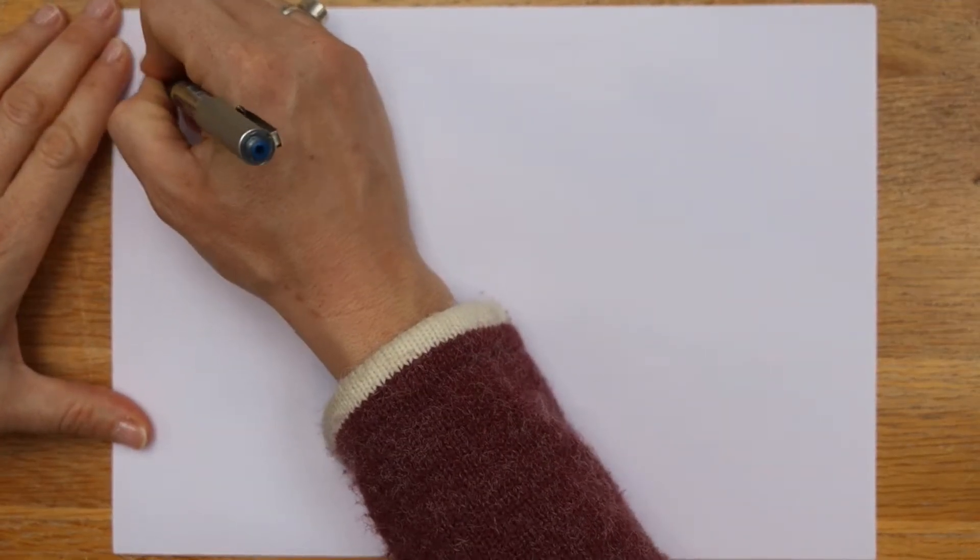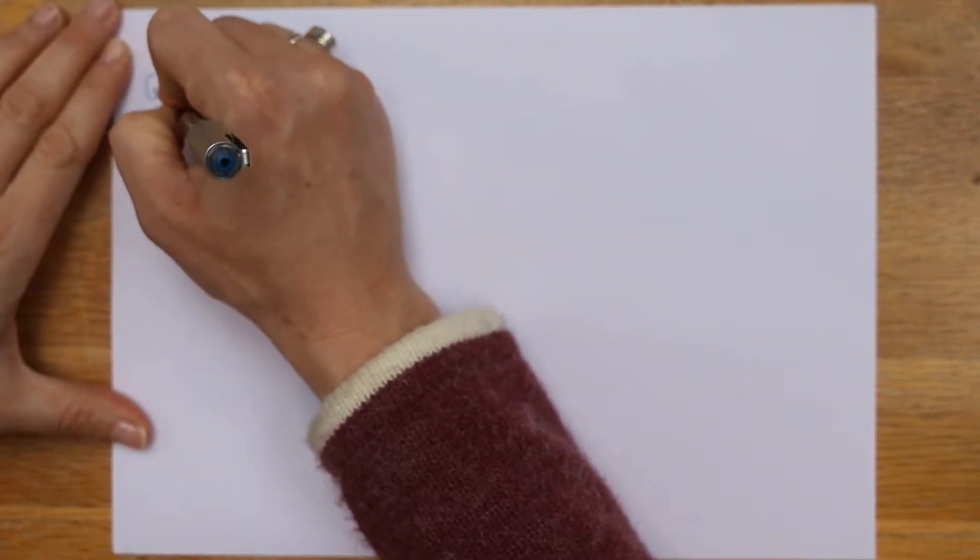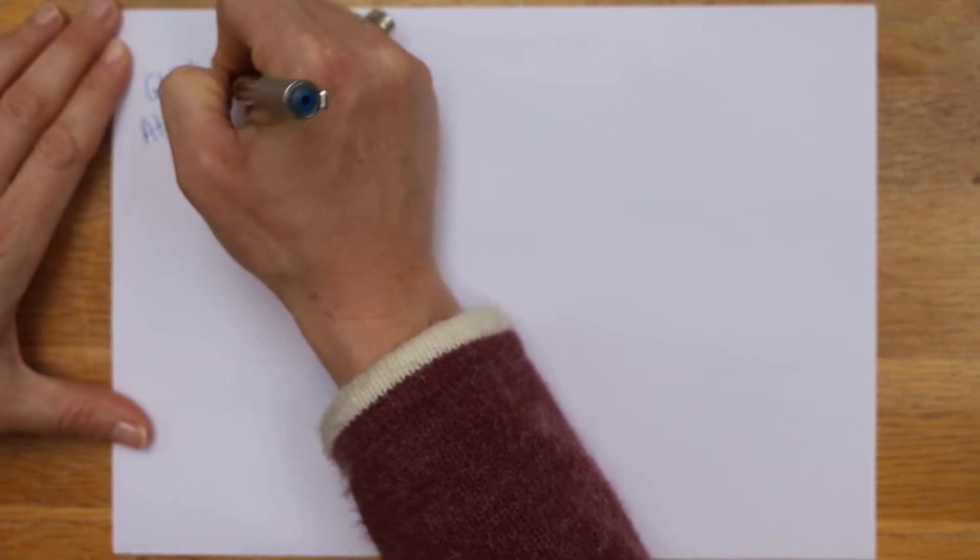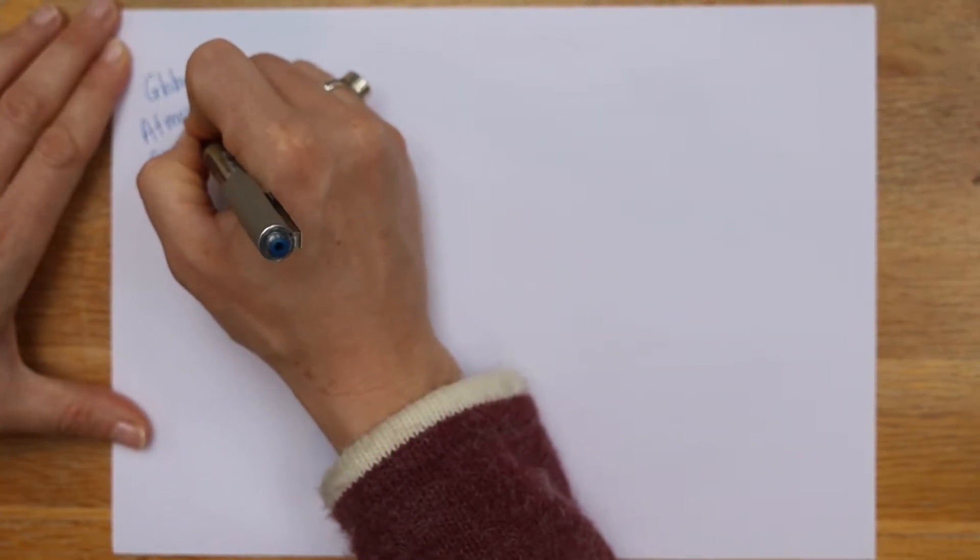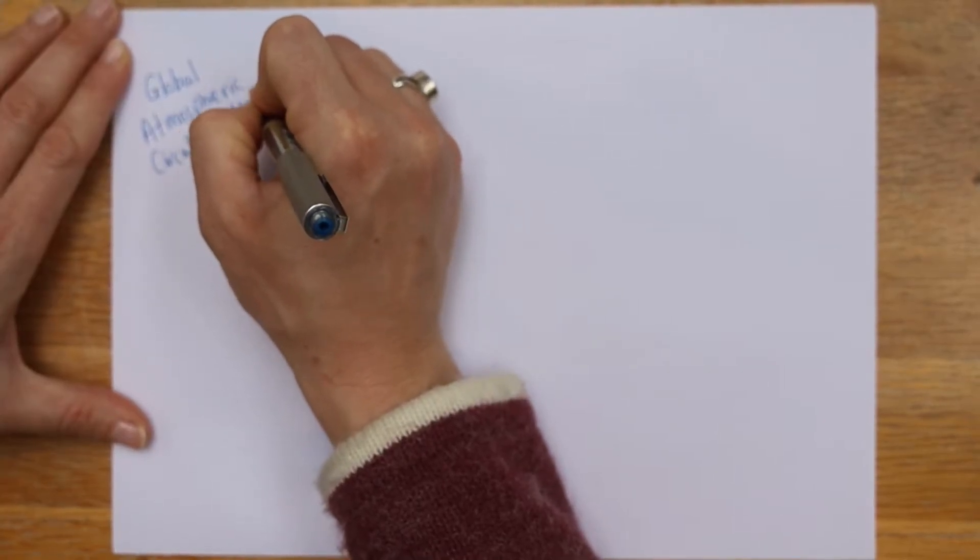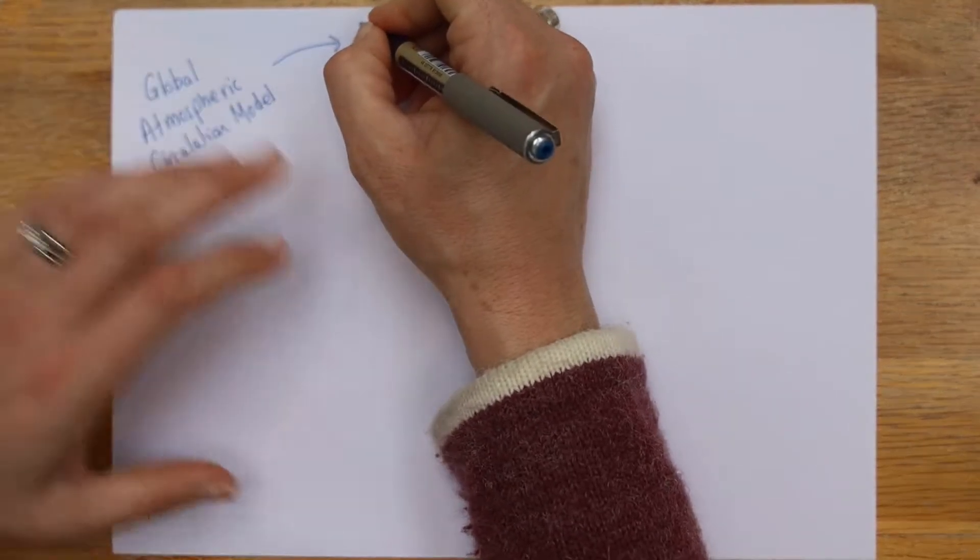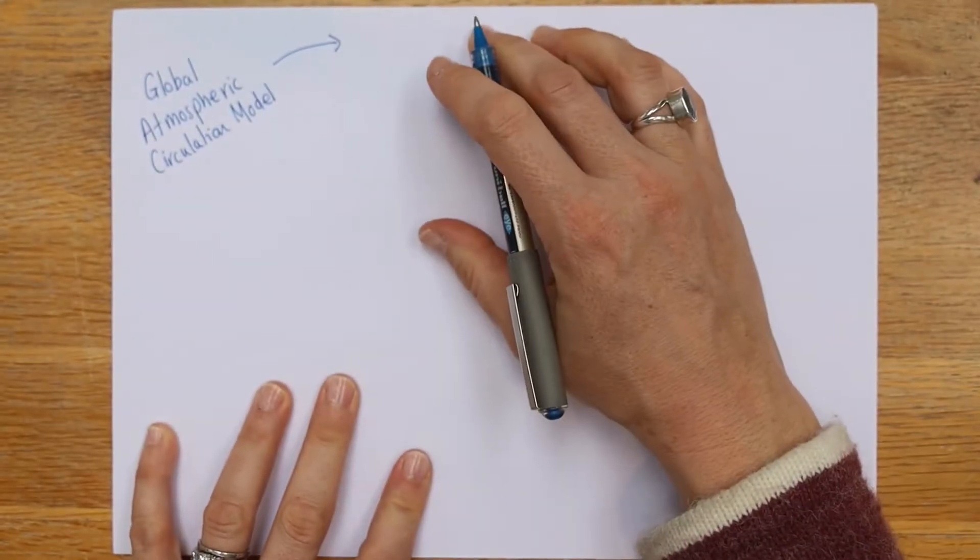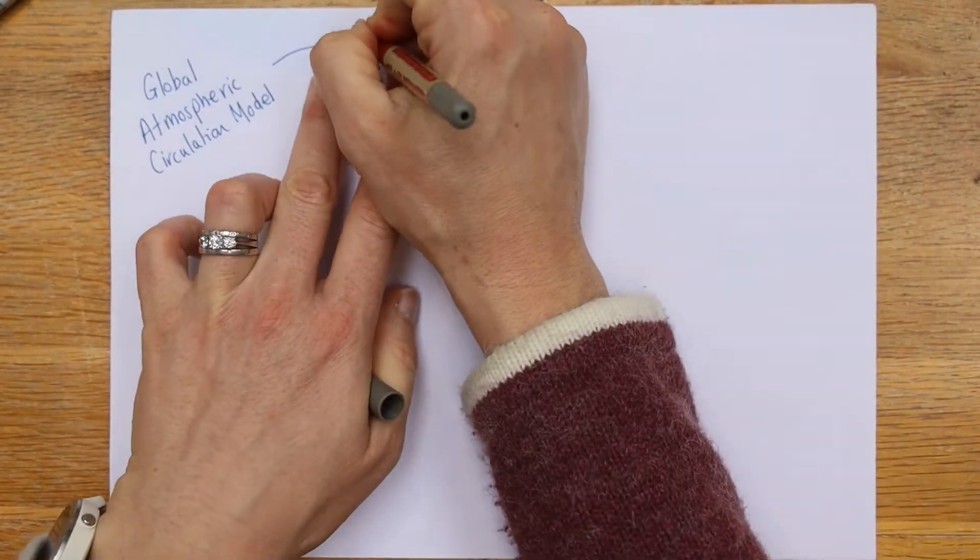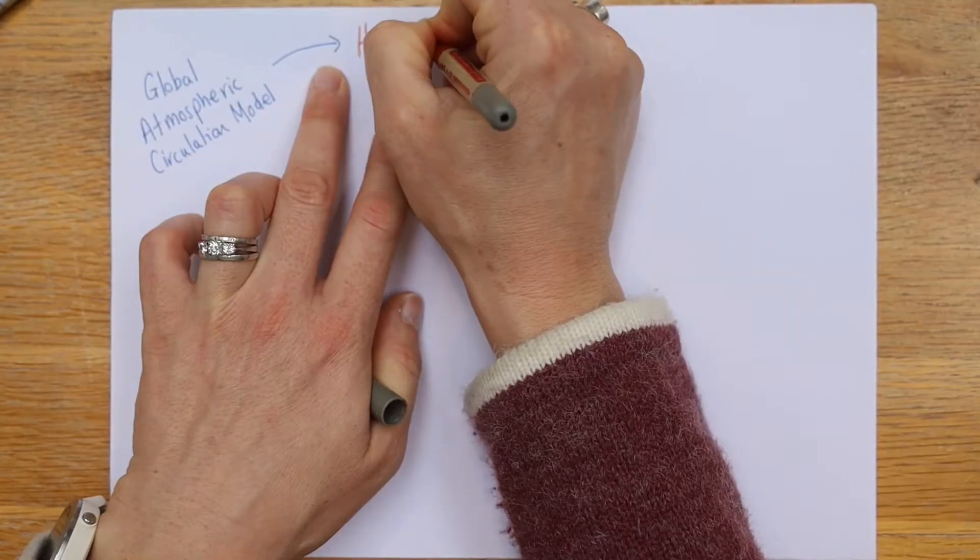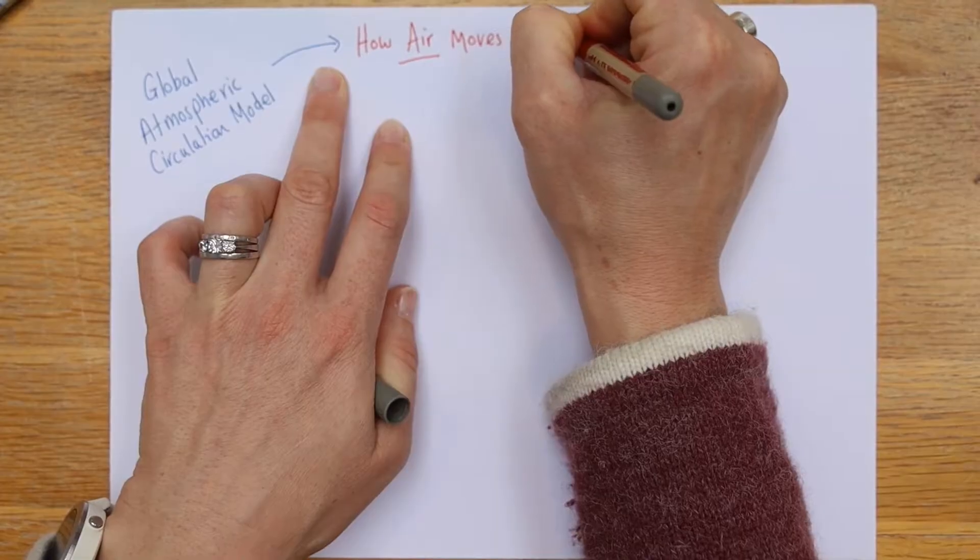It's basically how air moves around the Earth. So we're going to put our title today over here. It's the Global Atmospheric Circulation Model. And if you're not sure what that means, if you are worried about it at all, we're just going to say that is in red pen, I'm going to put it. How air moves around Earth.